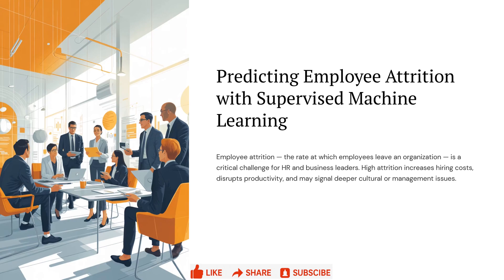Welcome to Practical AI Pro. In today's video we are exploring how machine learning can predict employee attrition — the rate at which people leave a company. High attrition not only increases hiring costs but also affects productivity and team culture. Stay tuned as we see how supervised learning helps organizations identify risk early and retain their best talent.